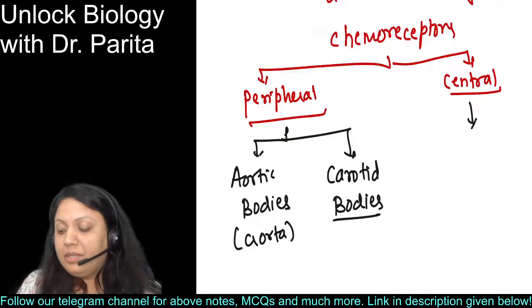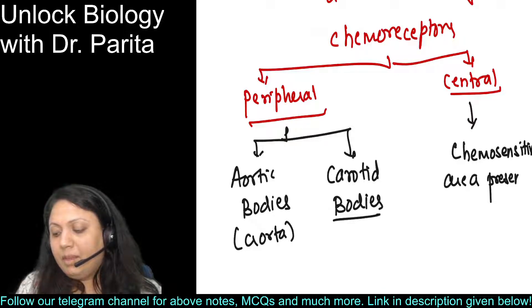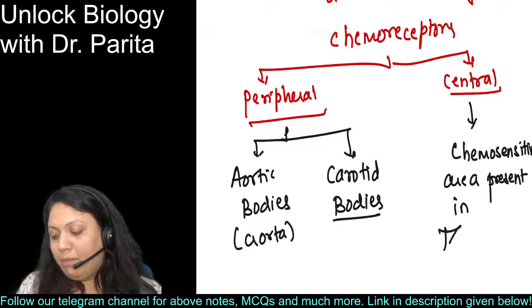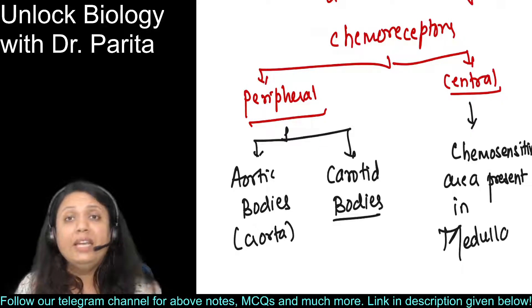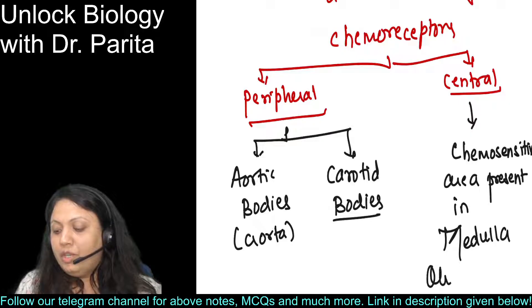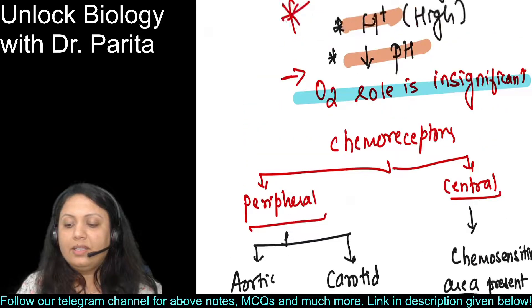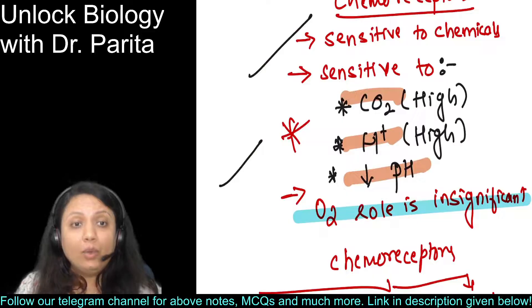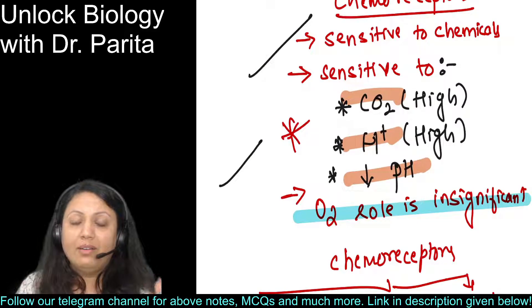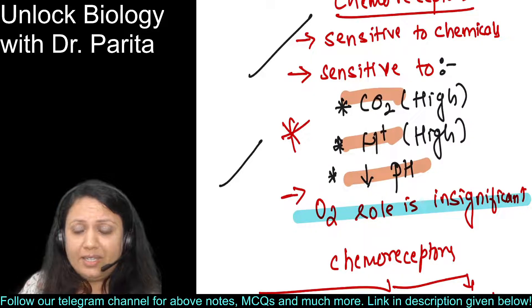Now let's come to central chemoreceptors. The central chemoreceptors are present in a chemo-sensitive region - a chemo-sensitive area present in medulla oblongata. In the respiratory rhythm center, and near to it, is present your chemo-sensitive area. This is sensitive to CO2, H+, and low pH. It is very much less sensitive to O2, so the role of O2 is insignificant.